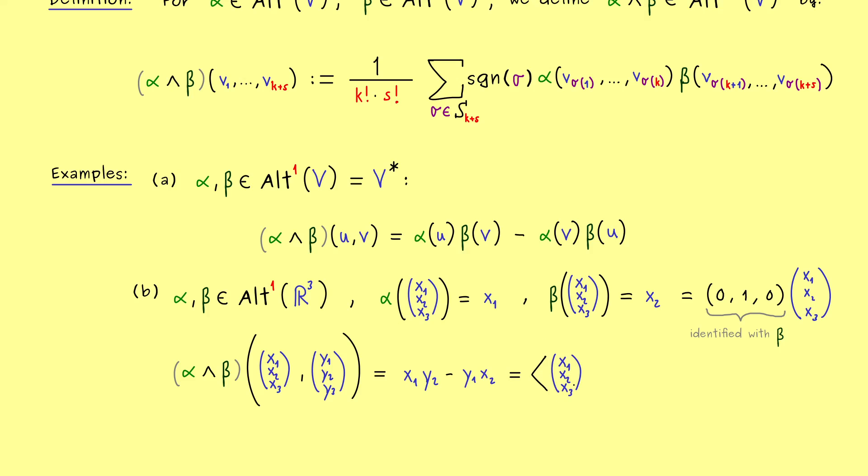And this we now could write as an inner product with a matrix. So let's use the pointed brackets for the inner product, and then let's write a 3×3 matrix which gives us this result. So it's not hard to see, we have (0, 1, 0) in the first row, then (-1, 0, 0) in the second row, and also only zeros in the last row.